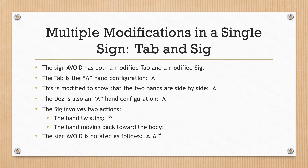Multiple modifications in a single sign — TAB and SIG. The sign VOID has both a modified TAB and a modified SIG. The TAB is the A hand configuration, capital letter A, modified to show that the two hands are side by side. The DES is also an A hand configuration, capital letter A. The SIG involves two actions: the hand twisting, and the hand moving back toward the body. The sign VOID is notated as shown.